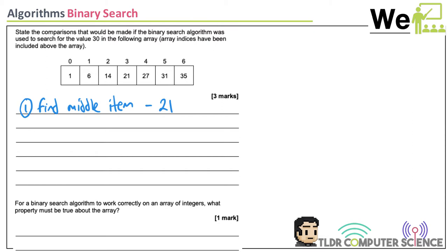21 is lower than 30. Because 30 is higher than 21, it must be on the right side. So you exclude all items on the left — find the middle item, then discard left.